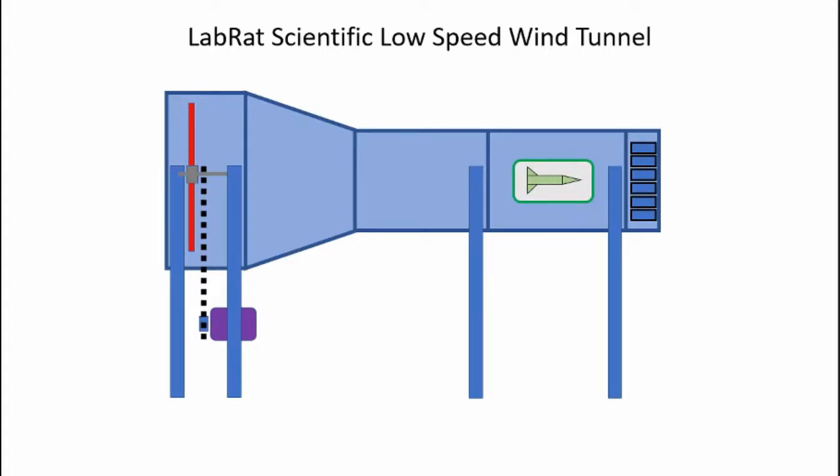Here's a simple diagram of my low-speed wind tunnel. In this wind tunnel, the air is flowing from right to left, so the propeller is actually drawing air through the wind tunnel. This gives me the best possible flow in my test section.